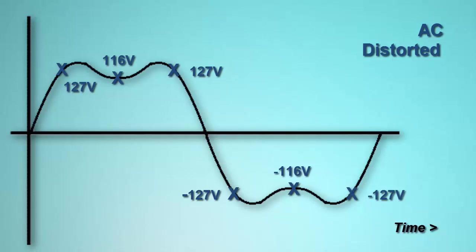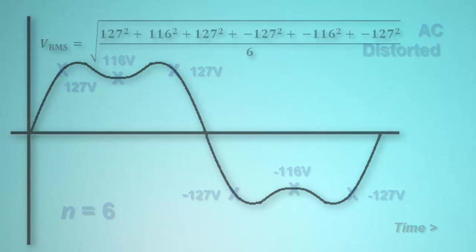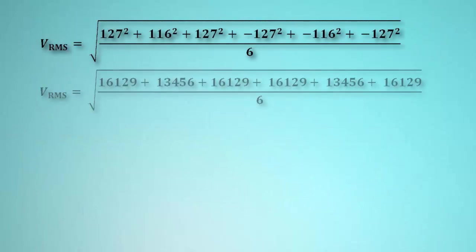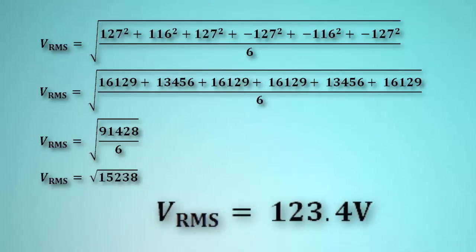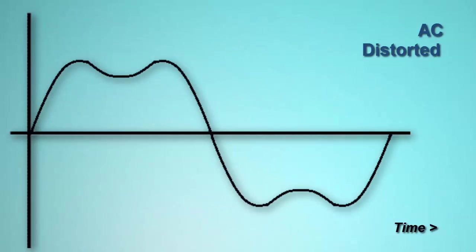Since in this example we have six measurements, the value of n is 6. Plugging this number and the measurement values into the formula, we derive the following. So in this example, RMS is approximately 123 volts. This means that the harmonic distortion introduced in the waveform shown on the screen has changed the V sub RMS value from 120 volts in its pure sinusoidal form to approximately 123 volts in its distorted form.